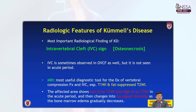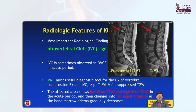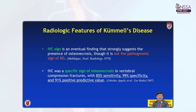What about the radiologic features of Kummel disease? The most important radiologic finding is the intravertebral cleft sign, so-called osteonecrosis. It is sometimes observed in osteoporotic vertebral compression fractures as well, but not in the acute period. On MRI, T1-weighted and fat-suppressed T2-weighted imaging are the most useful diagnostic tools — low signal on T1 and high signal on T2. The intravertebral cleft sign strongly suggests osteonecrosis, with sensitivity of 85%, specificity of 99%, and positive predictive value of 91% in the literature.